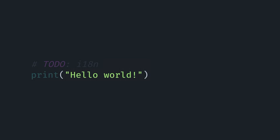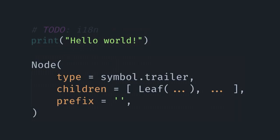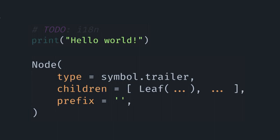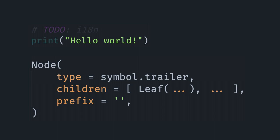If we back out to the trailer element, this actually contains the parenthesis and the argument. Because this is part of the actual grammar rule, this is now a node type, and the integer defines that it's a trailer. The children is just a list of those three leaf elements: the opening parenthesis, the string literal, and the closing parenthesis. The prefix here is empty, but if we were looking instead at the power node below it, we would see the to-do comment and the new line as part of that prefix.